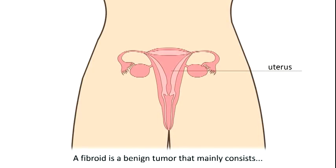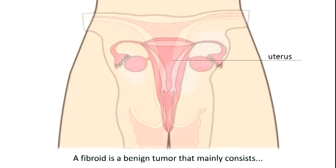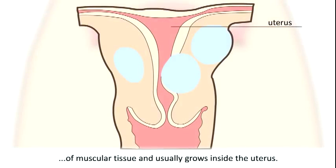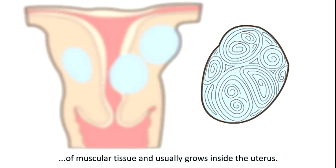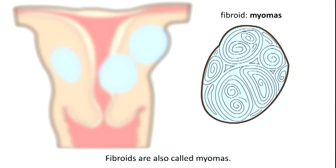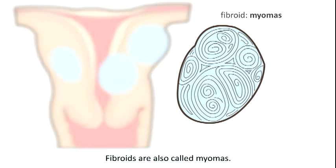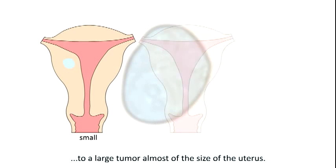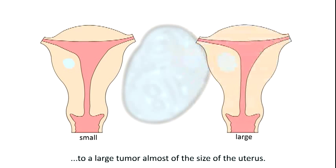A fibroid is a benign tumour that mainly consists of muscular tissue and usually grows inside the uterus. Fibroids are also called myomas. Their size ranges widely from a small tumour the size of a pea to a large tumour almost the size of the uterus.